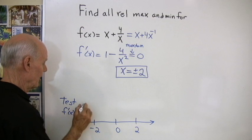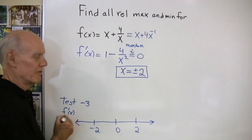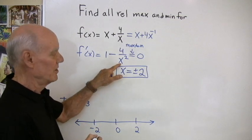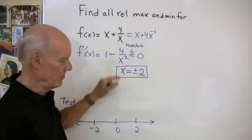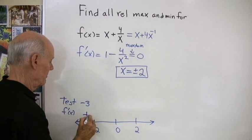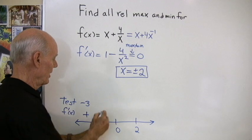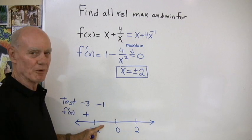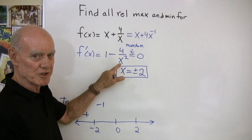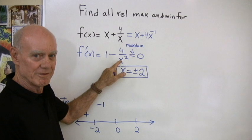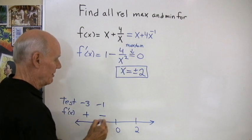In this interval, I'll test the point x equals negative 3. I put negative 3 in for x. That's 9 when I square it. I get 1 minus 4 ninths, a positive number. Now I go to this interval and I'm going to test the point x equals negative 1. I have 4 over negative 1 squared, which is positive 1. 1 subtract 4 is negative 3. So that's a negative number.